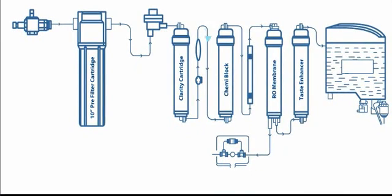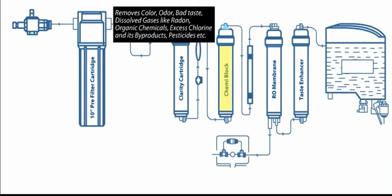The next stage is Chemiblock. This cartridge removes color, odor, bad taste, dissolved gases like radon, organic chemicals, excess chlorine and its byproducts, pesticides, etc.